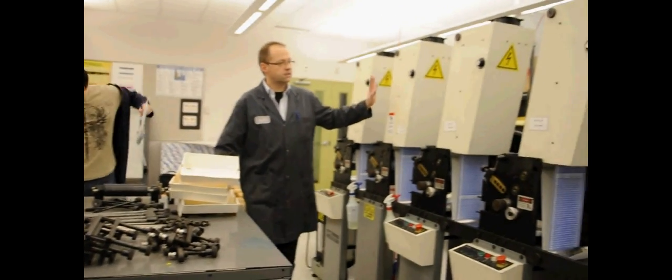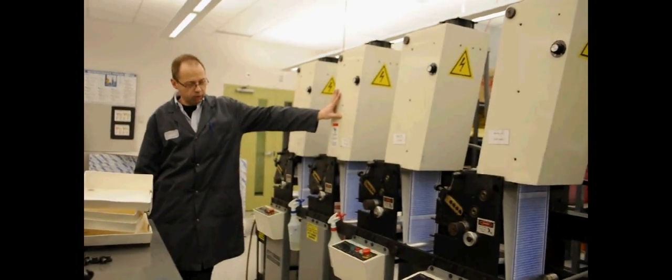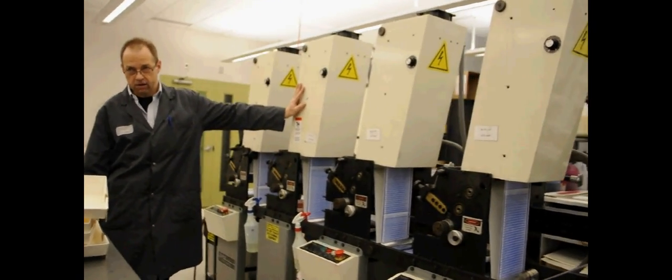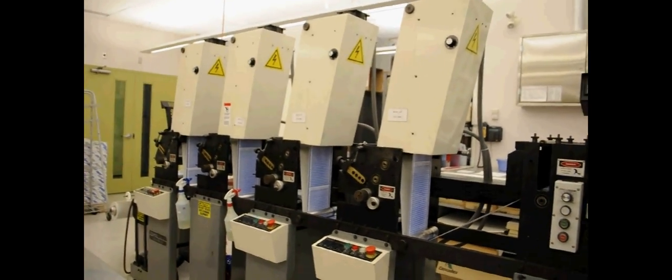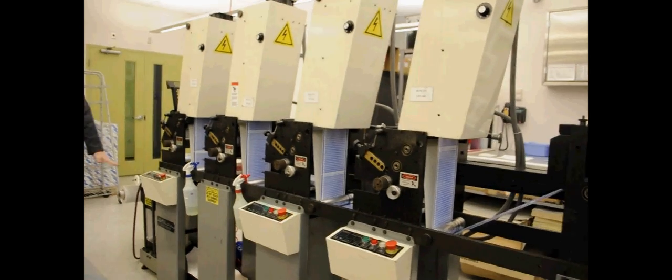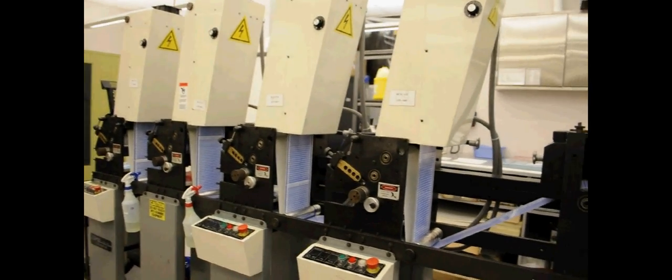This is our 7 inch Comco Cadet Label Press and we have here, like any webbed press, an unwind section with the web brake.